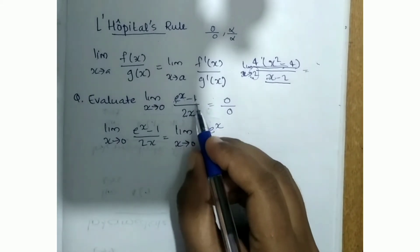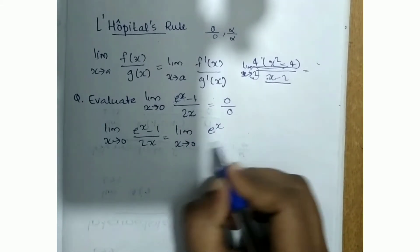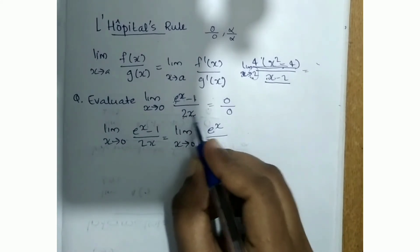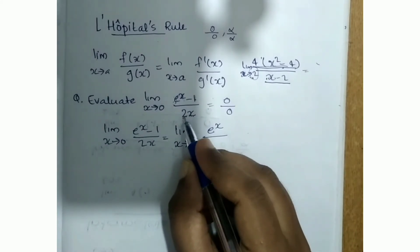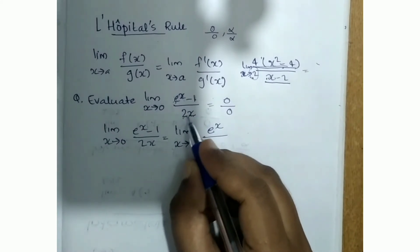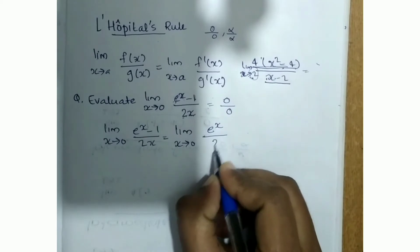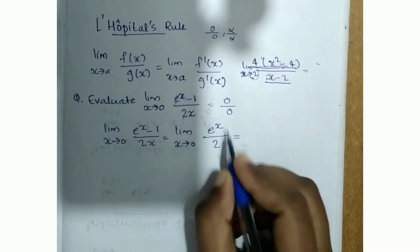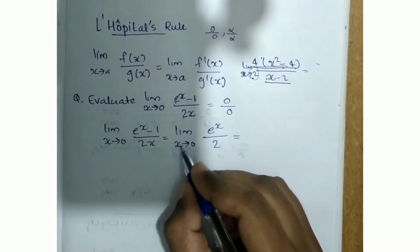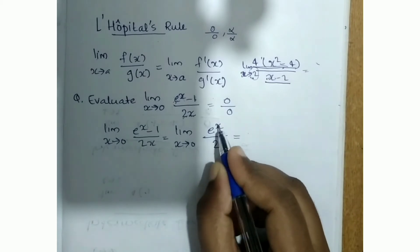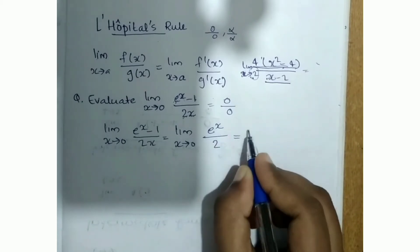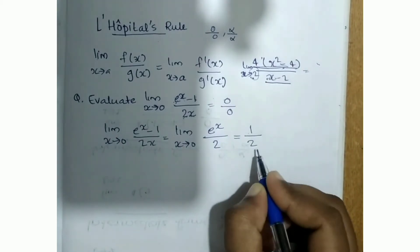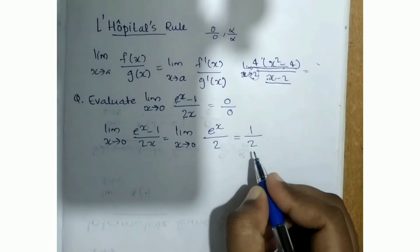We apply the L'Hôpital's rule. The differential of (e^x - 1) is e^x, and the differential of -1 is 0. Divided by the differential of 2x, which is 2. Now we substitute x = 0: e^0 = 1, divided by 2. So the answer is 1 by 2.